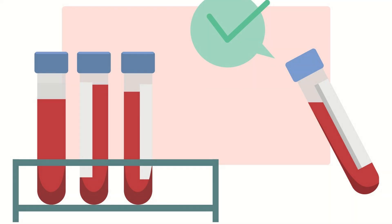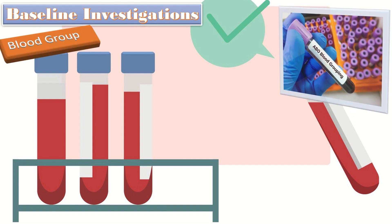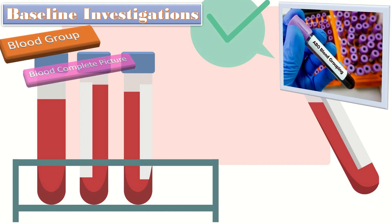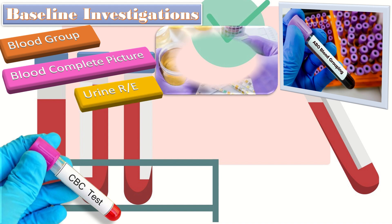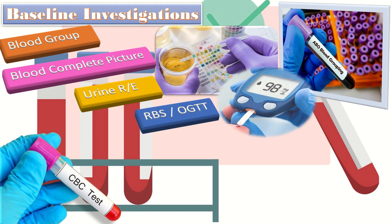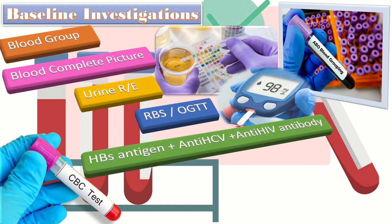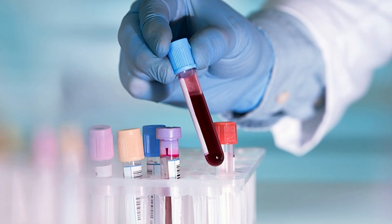After examination, proceed to baseline investigations, which include blood group and Rh factor, blood complete picture including hemoglobin, total leukocyte count, and platelet count, urine routine examination, random blood sugar or one-hour glucose challenge test. In Asian populations, it is better to perform an oral glucose tolerance test, along with HBsAg, anti-HCV, and anti-HIV antibody tests.